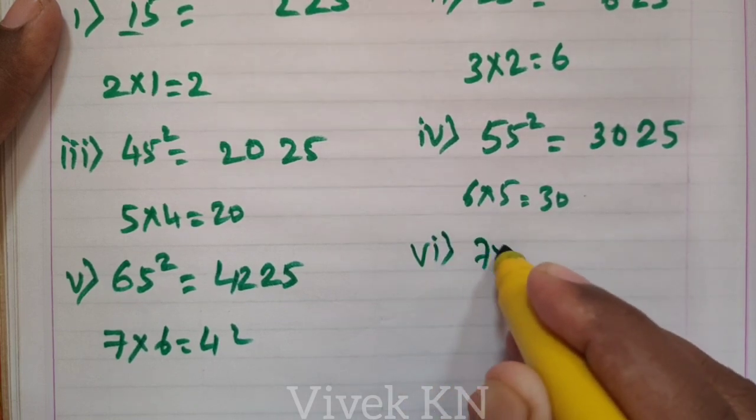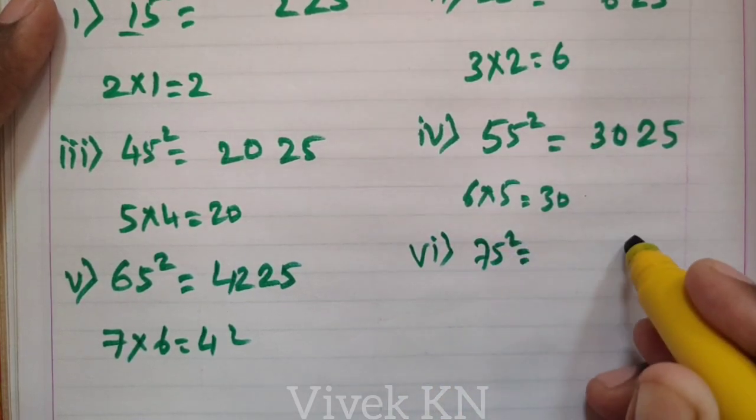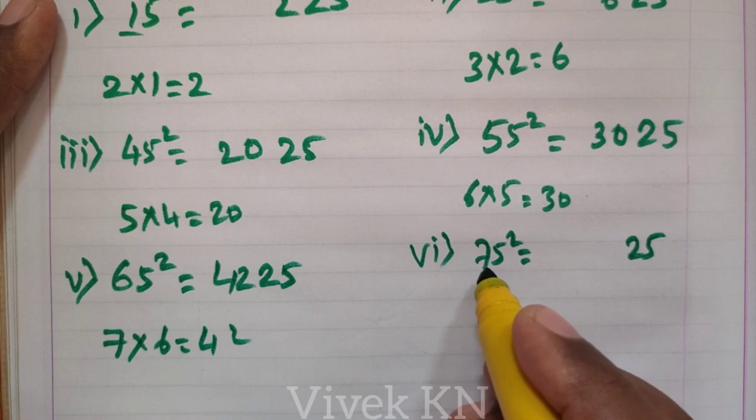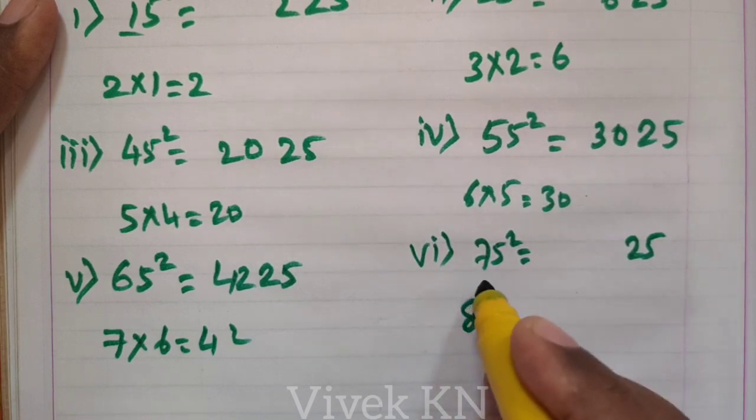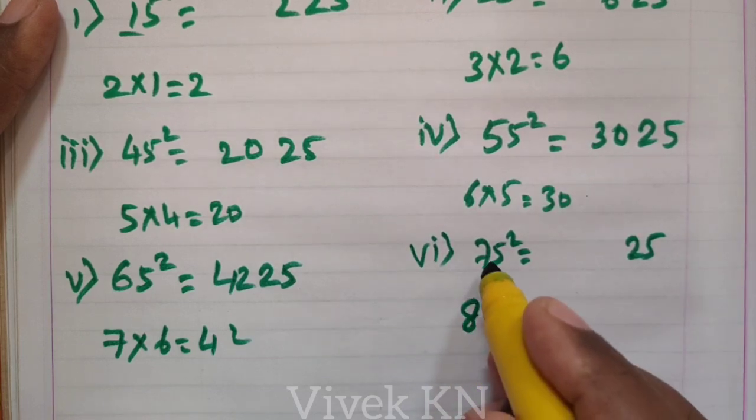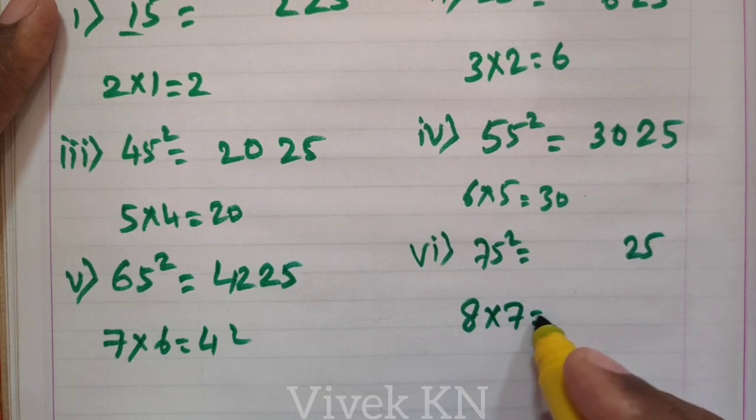Next, 75 square. 5 square is 25. The number that comes after 7 is 8. 8 is to be multiplied with 7. 8 times 7 is 56.